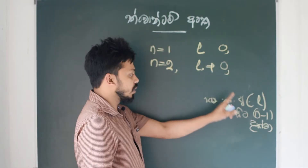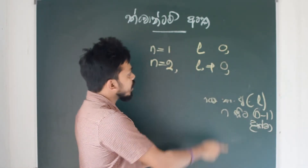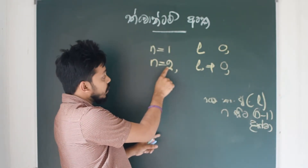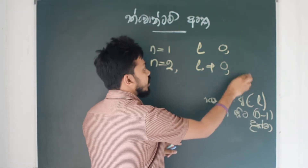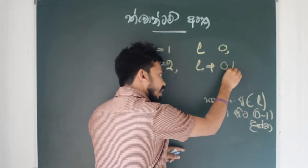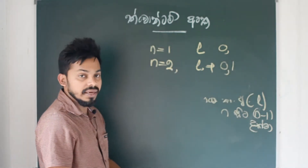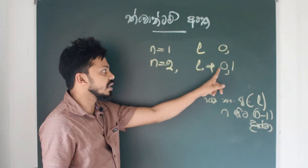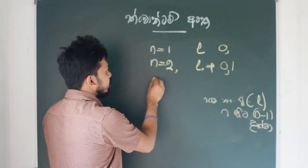After 2, we will be back to the decimal part, and we will take the decimal part, which is 1. That's it. This is 1. The decimal part will be 2.